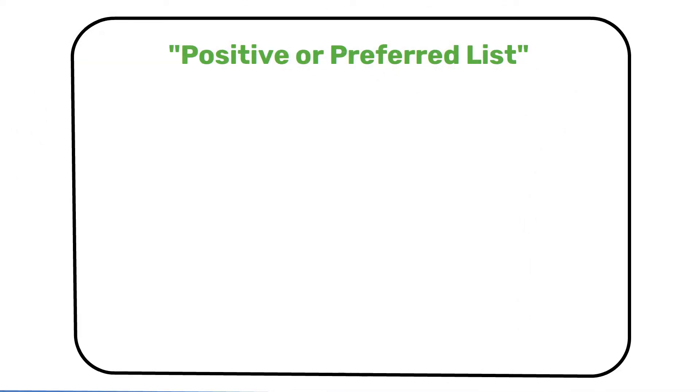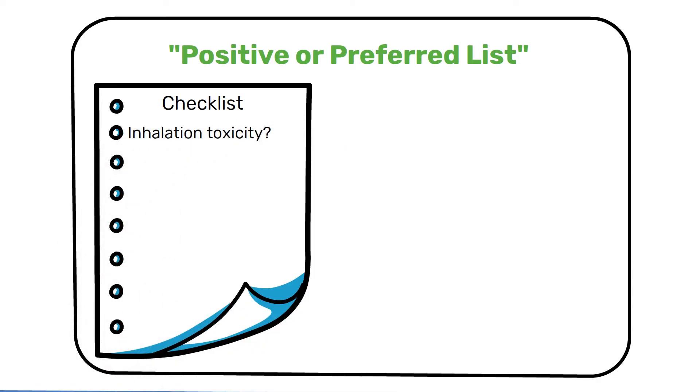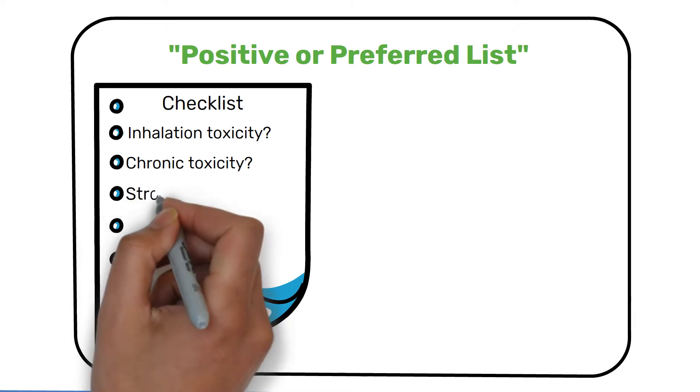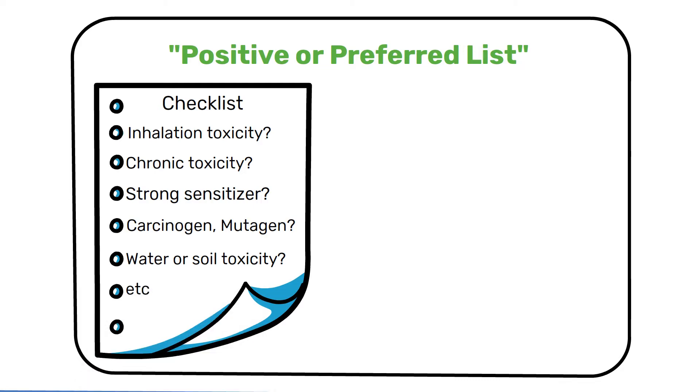The P list: This is our positive or preferred list that includes substances actively defined as healthy and safe for use. Some checklists we consider are acute oral or inhalation toxicity, chronic toxicity, is the substance a strong sensitizer, is the substance unknown or suspected carcinogen or mutagen disruptor, water or soil toxicity, etc.